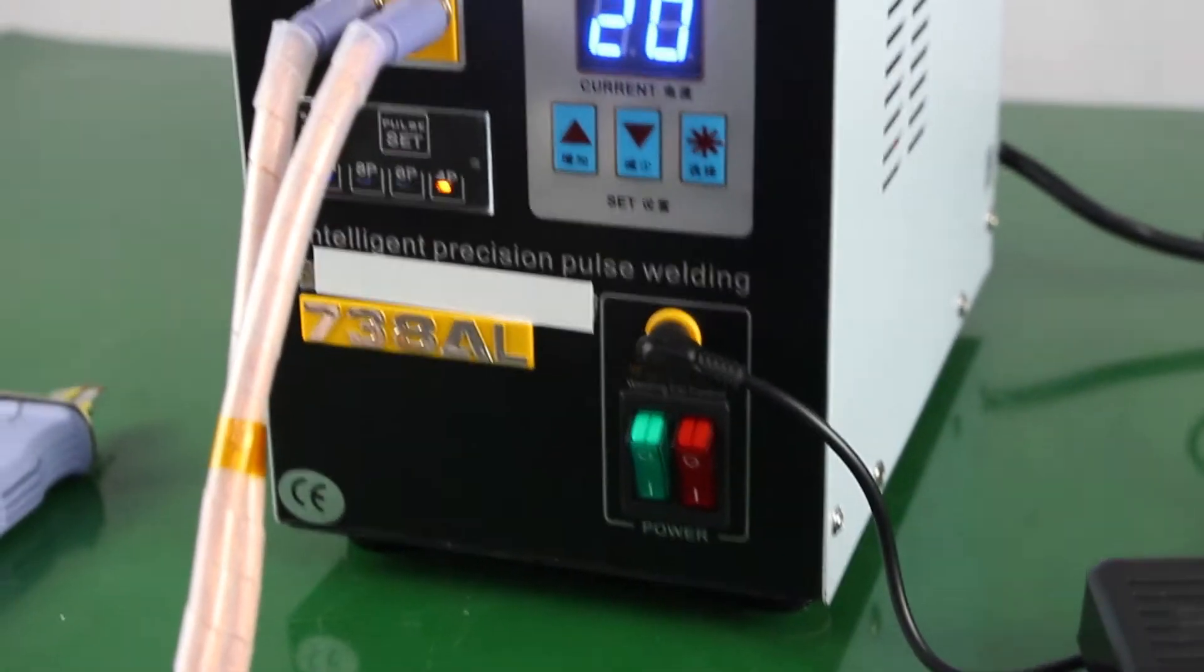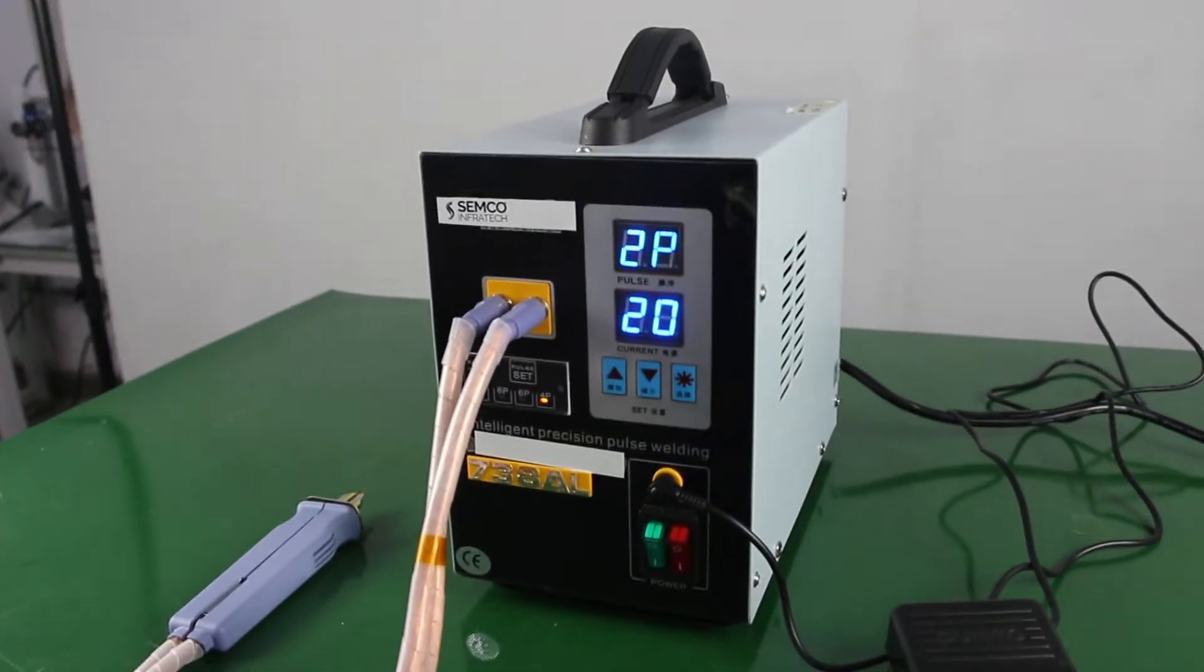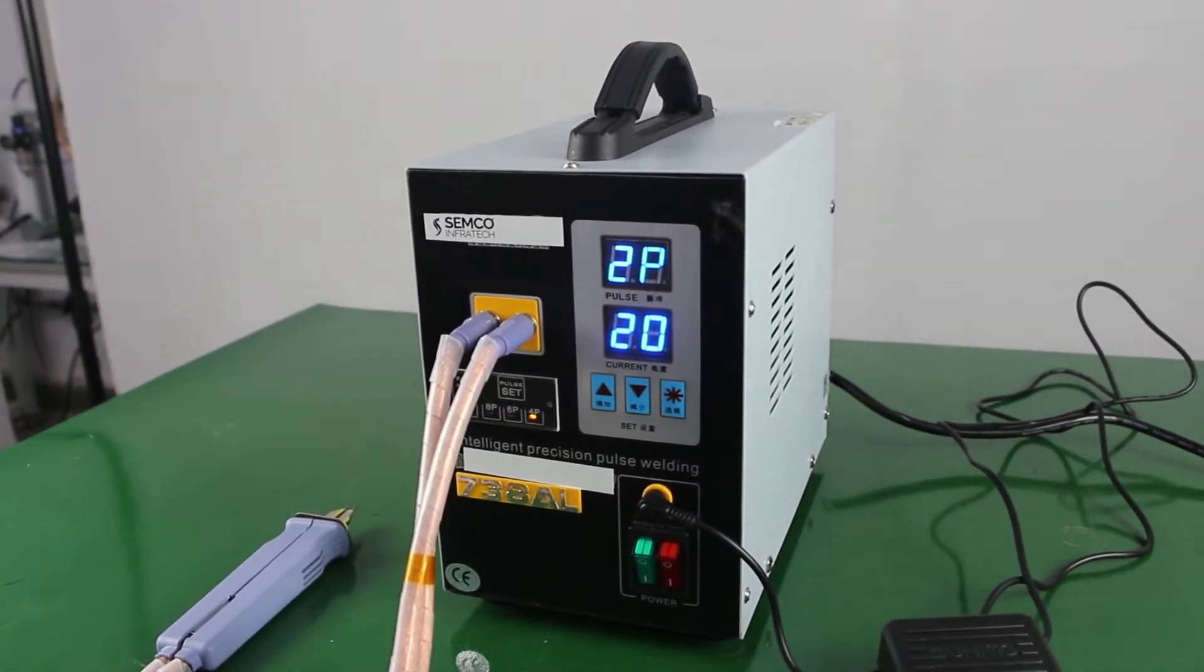This machine has a single phase power supply and power up to 3.6kW, and welding current can range from 120A to 1100A.